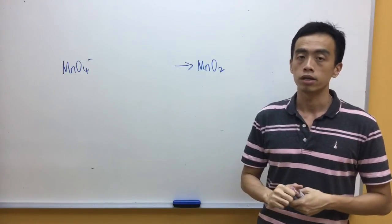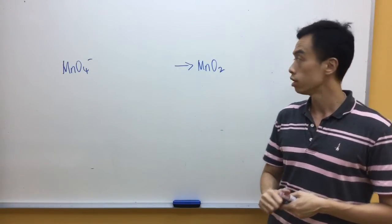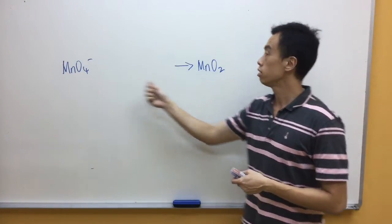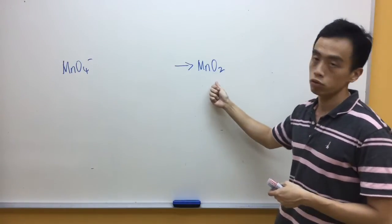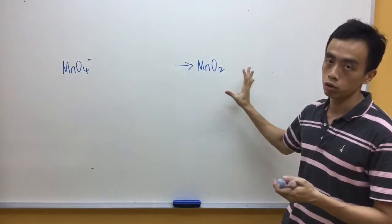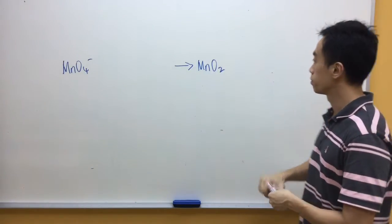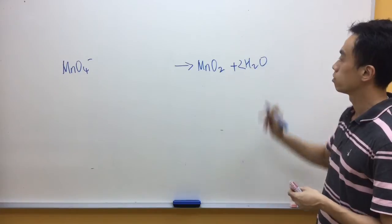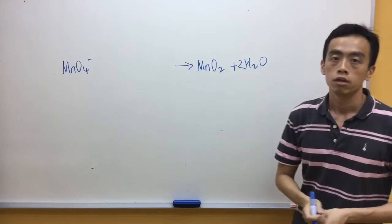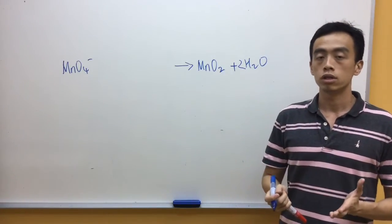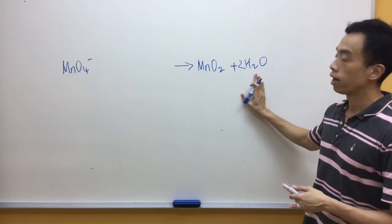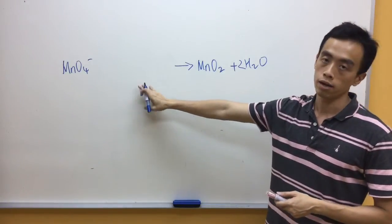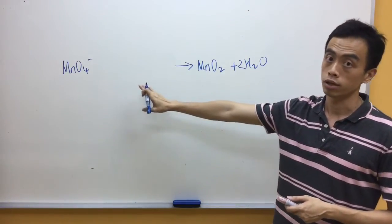The second step is to balance oxygen using water. On the left-hand side I have 4 oxygen; on the right-hand side I have 2 oxygen, so I am short of 2 oxygen on the right-hand side. The next step is to balance hydrogen using H⁺. On the right-hand side I have 4 hydrogen, so I need to add 4 H⁺ on the left-hand side.